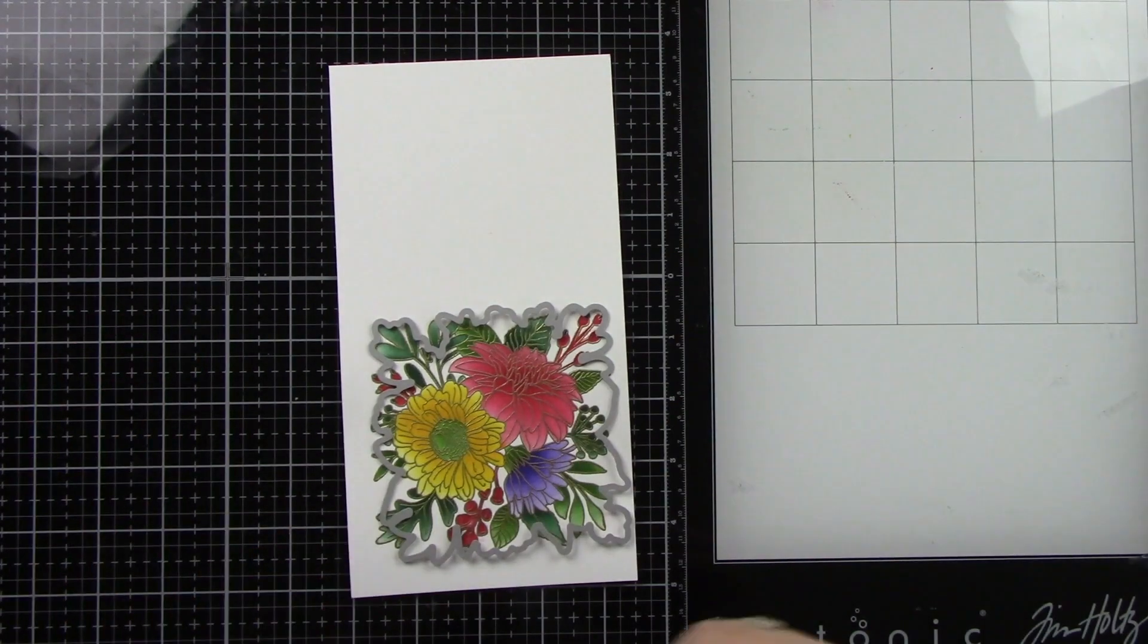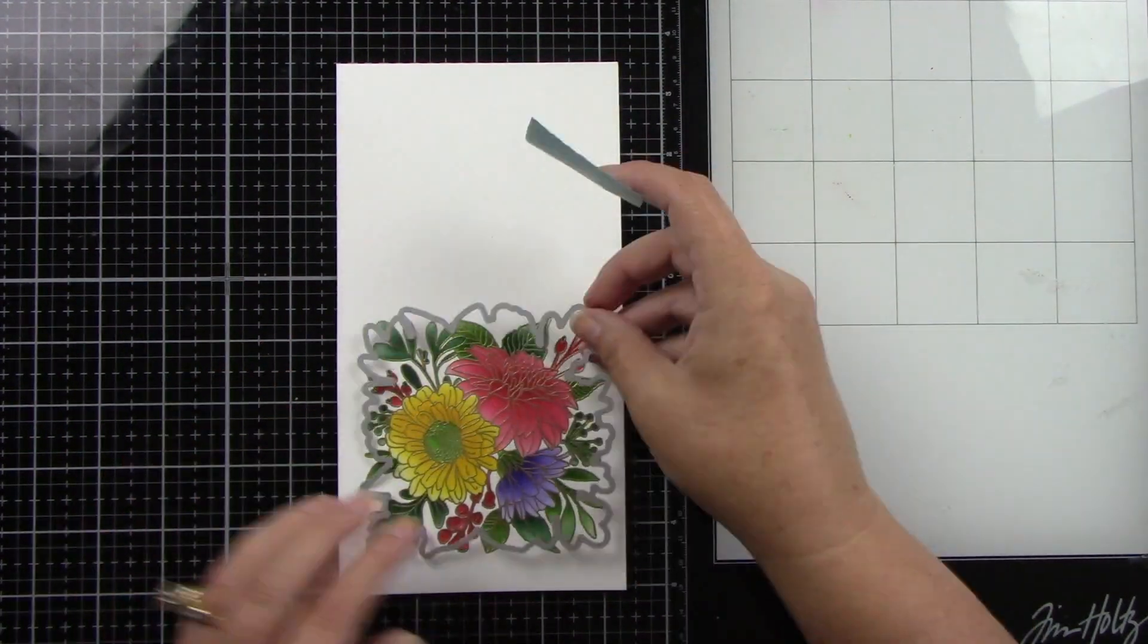Let's use that coordinating die to die cut it out. I'm going to just tape that down with some low-tack tape and run that through my die cut machine.